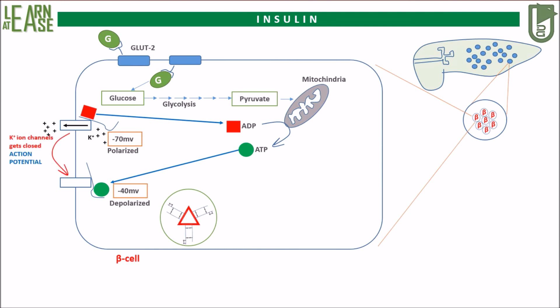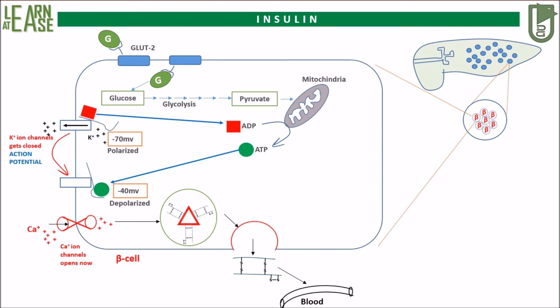This will drive the opening of another type of ion channel, which imports calcium into the cytoplasm, driven by the potential difference across the membrane. The calcium that has entered the cytoplasm will cause the secretory vesicles to fuse with the cell membrane, and insulin is released into the blood by exocytosis.